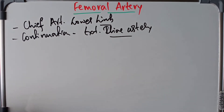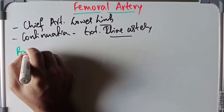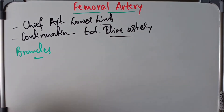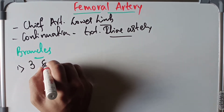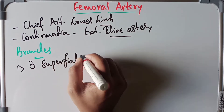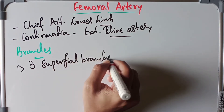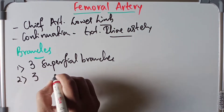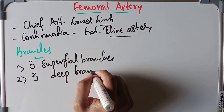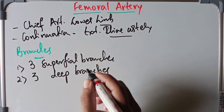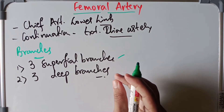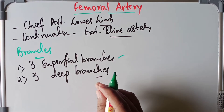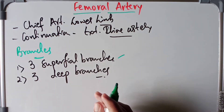The femoral artery then runs downwards through the femoral triangle, through the adductor canal, and enters the popliteal fossa by becoming the popliteal artery. That is the course of the femoral artery. Now let's look at its branches. The femoral artery gives rise to three superficial branches and three deep branches. The superficial branches are: the superficial epigastric artery, the superficial external pudendal artery, and the superficial circumflex iliac artery.